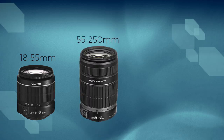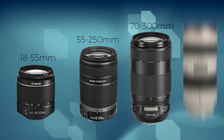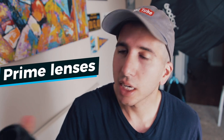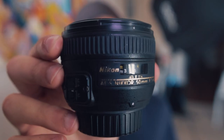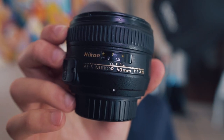You'll typically see 18 to 55 millimeters, 55 to 250 or 200, 70 to 300, 70 to 200 — various numbers like that. Those are all called zoom lenses. And then you have what are called prime lenses. This here is a 50 millimeter F 1.4 lens, and you can see the only number on it is 50 millimeters and then F slash 1.4. With this lens, the only way to zoom in and out is to physically move your body forward and backward.